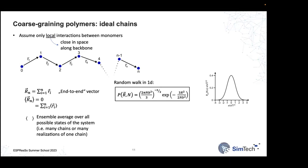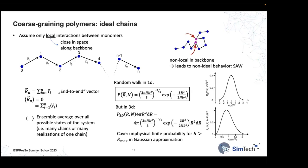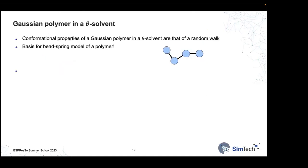In three dimensions you end up with a Gaussian expression for the end-to-end distance, though there is a slightly unphysical behavior at infinite extension. Beyond the ideal chain, you can include non-local interactions — for example a self-avoiding walk — but we'll focus on Gaussian polymers. The relevant case is a Gaussian polymer in a theta solvent, where the interaction between monomers is exactly the same as with the solvent background.